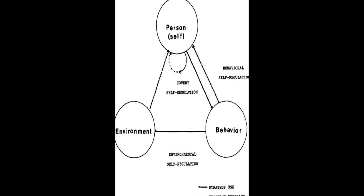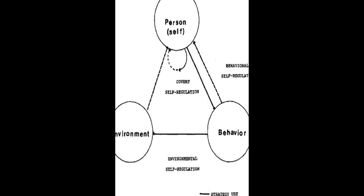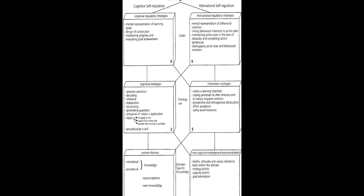The models are then compared in terms of phases and subprocesses, how they conceptualize metacognition, motivation, and emotion, top-down/bottom-up approaches, automaticity, and context.